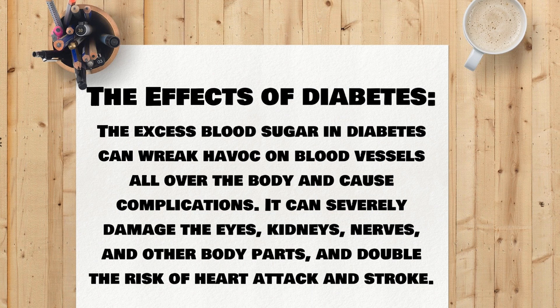The excess blood sugar in diabetes can wreak havoc on blood vessels all over the body and cause complications. It can severely damage the eyes, kidneys, nerves, and other body parts, and double the risk of heart attack and stroke.